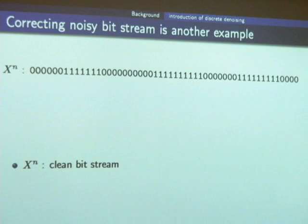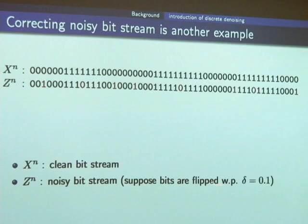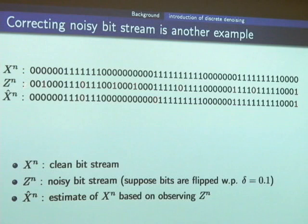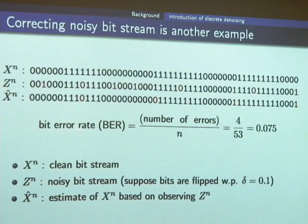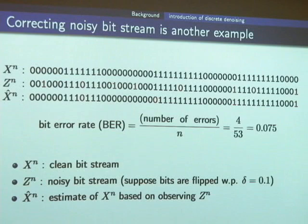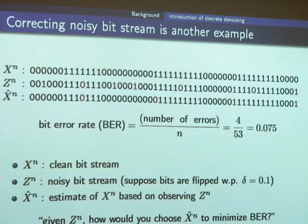A binary version of this problem: xₙ is a clean binary bitstream. Suppose noise flips bits with probability 0.1. Observing the noisy sequence, a denoiser tries to reconstruct xₙ as x̂ₙ. It may correct some errors, but since it doesn't know which bit is noisy and which is clean, it may also inject some errors. Hopefully, it reduces the error from the noise. The performance is measured by bit error rate — the number of errors divided by sequence length n. The goal is: given a noisy sequence, how do you choose x̂ₙ to minimize the bit error rate?